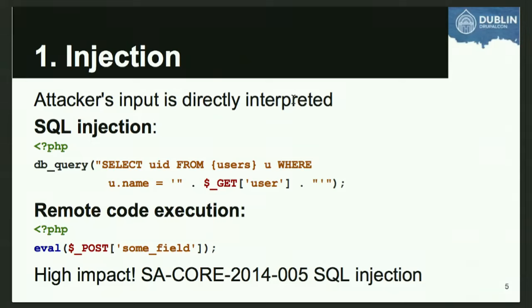Looking at a typical database query example: what's wrong is we're taking user input from the query string and directly concatenating it into the SQL query. Unfortunately you see this more often than you should in contrib modules. This is extremely bad but very easy to avoid - just use the database placeholders. Use the API correctly and you'll avoid this. Those database placeholders escape user input so it cannot be executed as its own SQL statement.